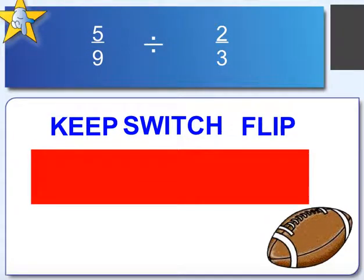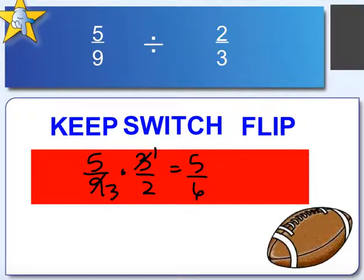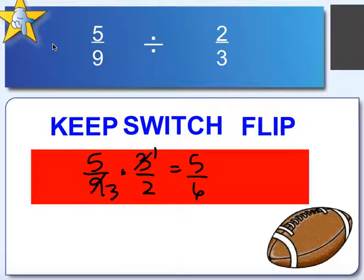5 ninths divided by 2 thirds: we say 5 ninths times 3 halves, and we get 5 over 6. What we are truly saying with all of these division problems is: how many two thirds can we get into five ninths? Just like with whole numbers — if five ninths were 20 and two thirds were four, how many fours can go into 20? Here, we can get 5 sixths of two thirds — almost a full two thirds into five ninths.